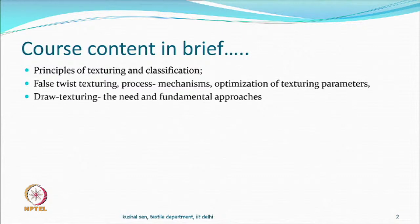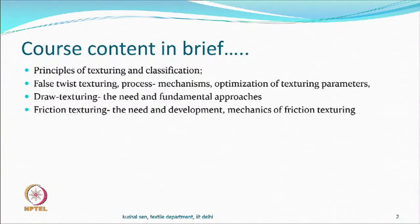Within this category you also have a draw texturing process, where the filaments which are supposed to be textured are not fully drawn — they are undrawn or partially oriented yarns. What to do in such cases is what we call draw texturing. The next in this line is friction texturing, where friction is a very important component in the whole process for twisting purposes.